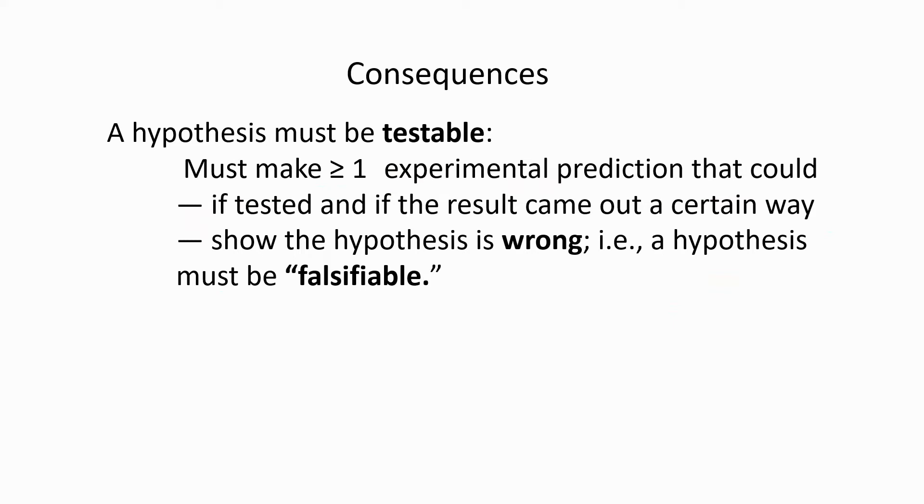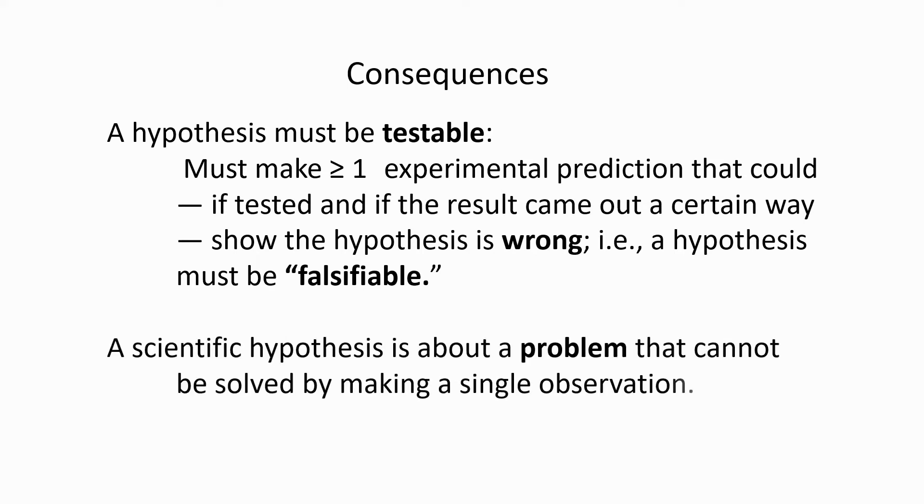These ideas have some important consequences. The first is that a hypothesis must be testable. That means that it must make at least one experimental prediction that could, if tested, and if the result came out a certain way, show that the hypothesis is wrong. And this is what we mean by saying that the hypothesis is falsifiable. It also follows that a scientific hypothesis is about a problem that cannot be solved by making a single observation, and it often involves unobservable factors that play a role in something called the mechanism.